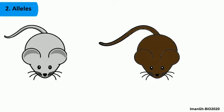Let's consider two characteristics of mice. These two traits are coded by two different genes. As you can observe, the first mouse is grey, while the second one is brown. So the gene coding for fur color exists in different versions such as black, grey, brown and white.